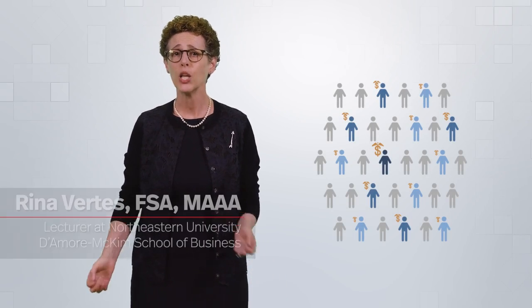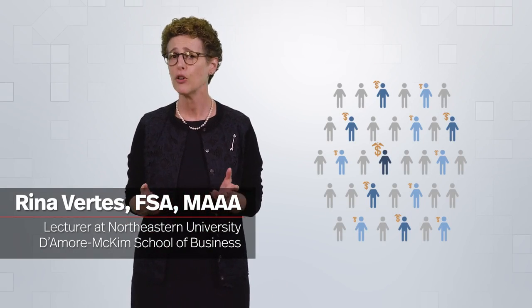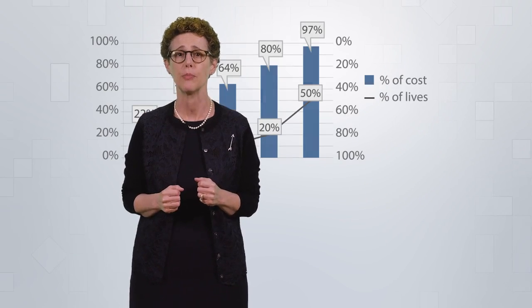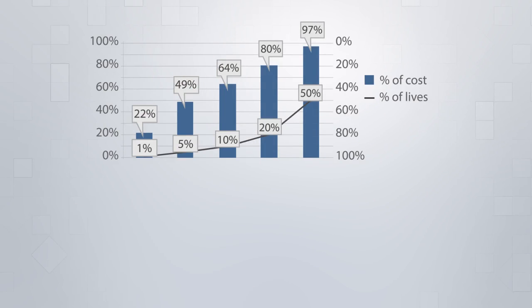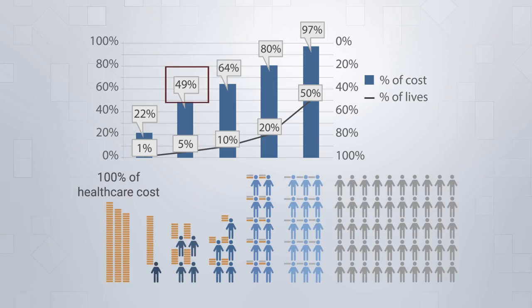Healthcare costs are not equally distributed across all people. As a matter of fact, most healthcare expenses are concentrated in a small subset of people. The graph being shown has the percentage of costs on the left and the number of lives on the right. The most costly 5% of people in a given population account for 50%, that is one half, of the total healthcare costs for the entire population.